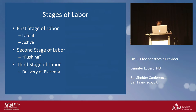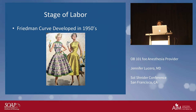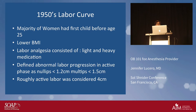Much of the stages of labor were developed by Dr. Friedman in the 1950s. The Friedman curve was done when the majority of women had their child before age 25, BMI was lower, labor analgesia was described simply as light and heavy, and there was no evaluation of ethnicity. Abnormality was defined very precisely: nullips changing less than 1.2 cm/hr, multips less than 1.5 cm/hr, with active labor starting at four centimeters.